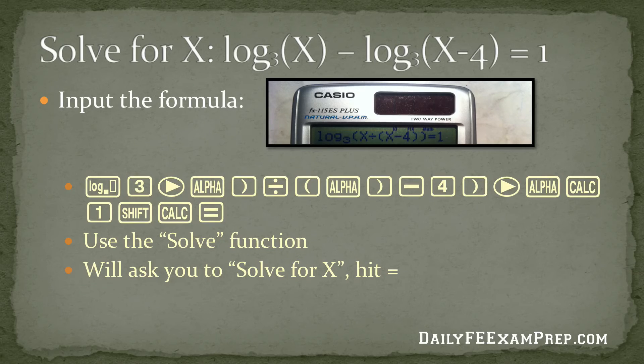Hit the alpha button, the parentheses button, which is your x variable. Then divide it by your parentheses button so we can close that function. Then hit the alpha right parentheses button again to define x. Then hit minus 4, close those parentheses, and then move over to basically input our equal sign and 1.